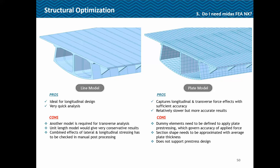The cons of a plate model are that you have to create dummy elements to transfer forces to the plates, and approximation comes in there. The complete cross-section shape must be approximated with average plate thickness — tapered parts are replaced by plates of average thickness. Also, it does not support pre-stress design in the software.